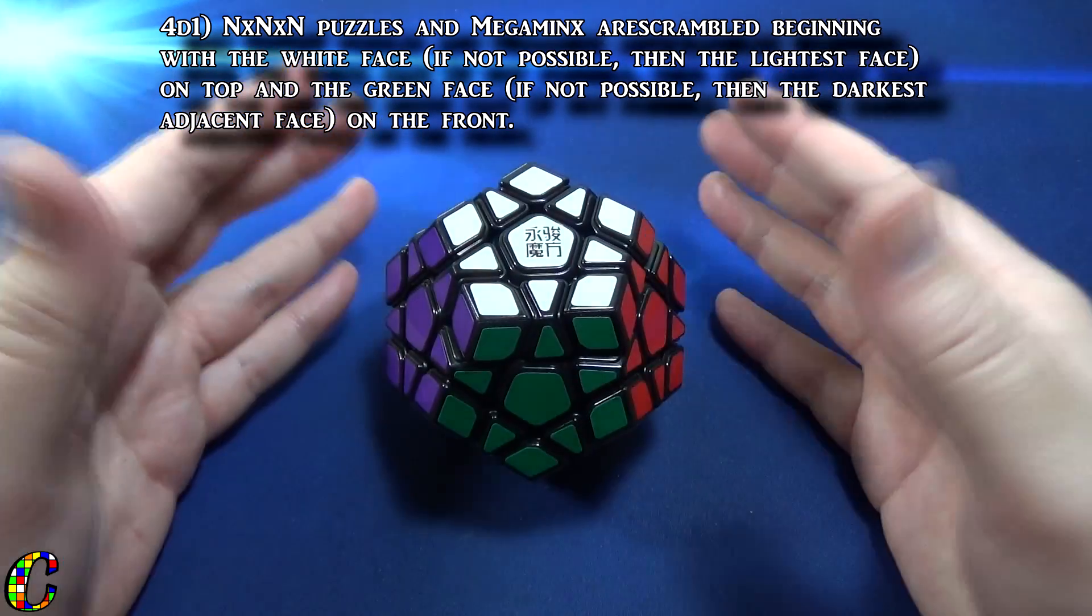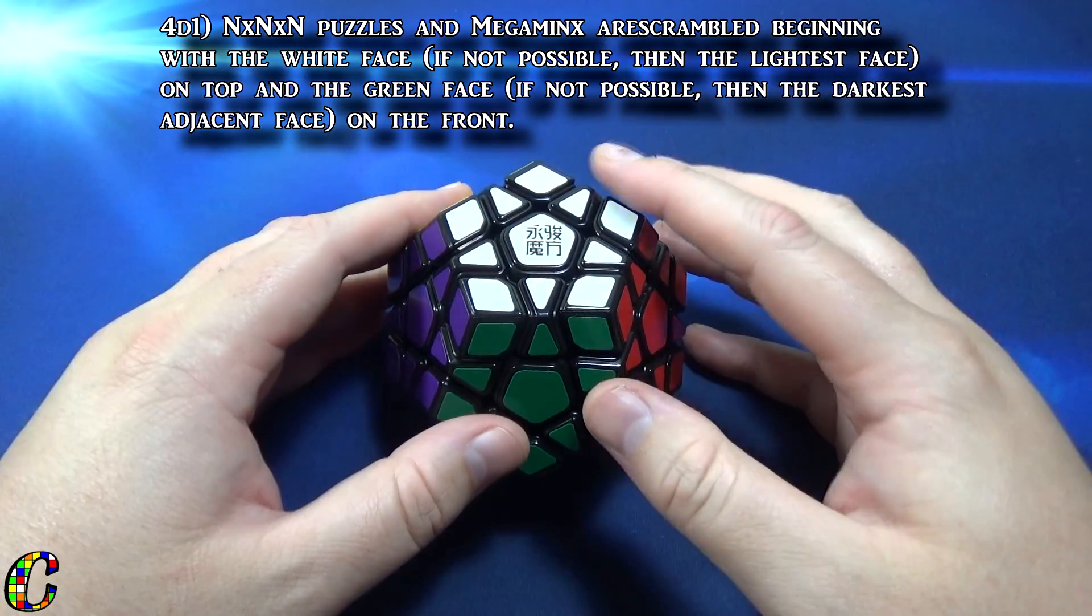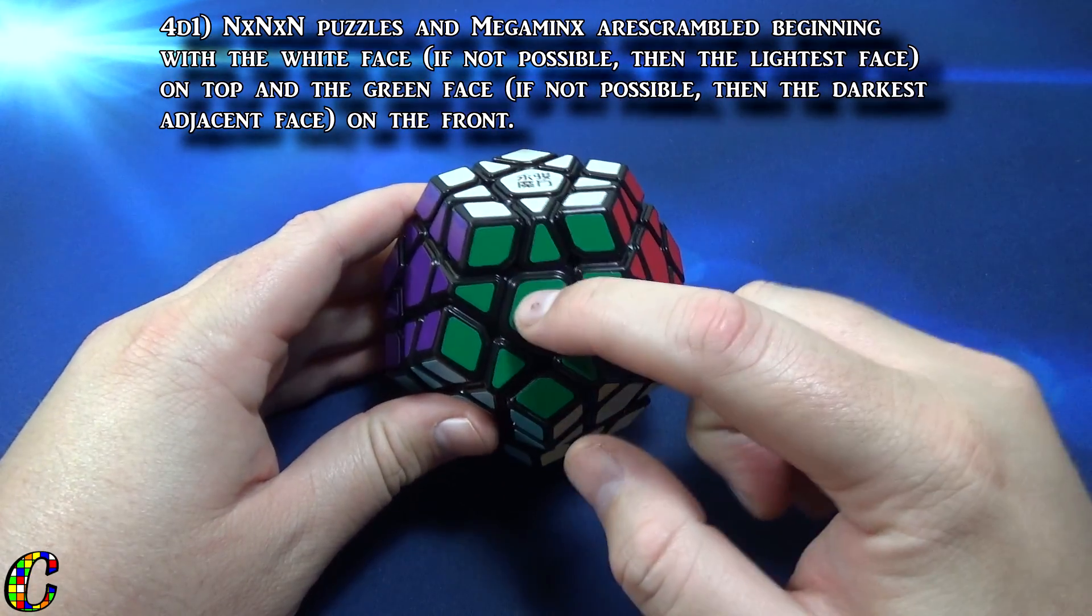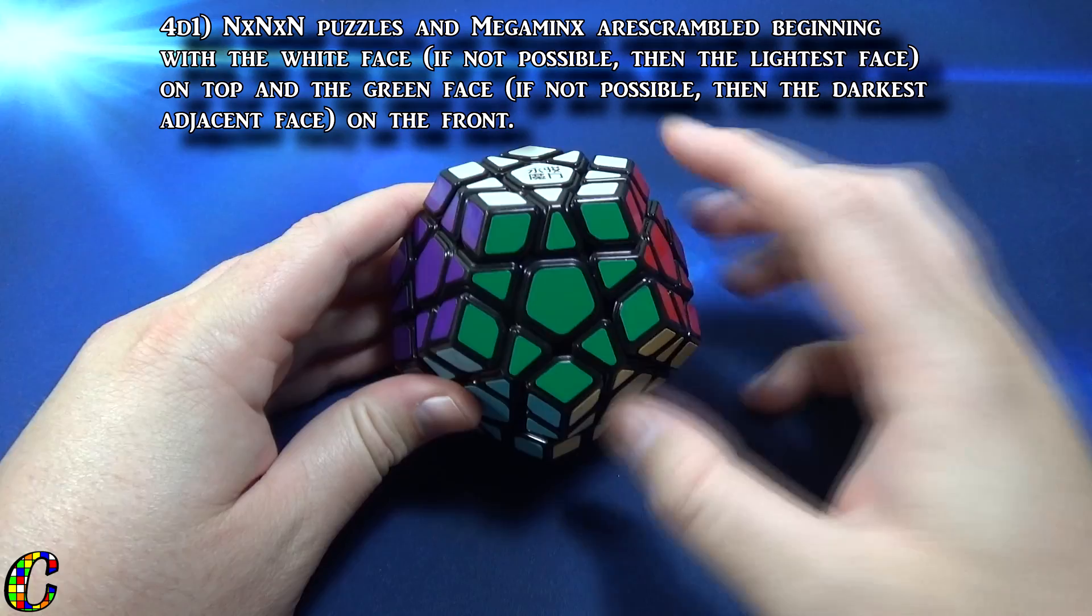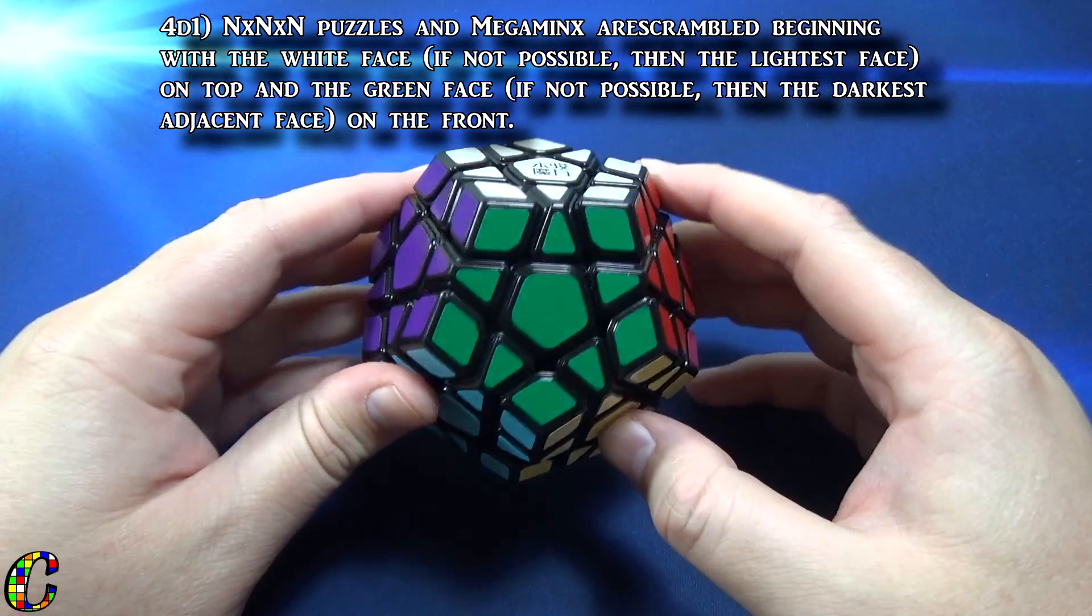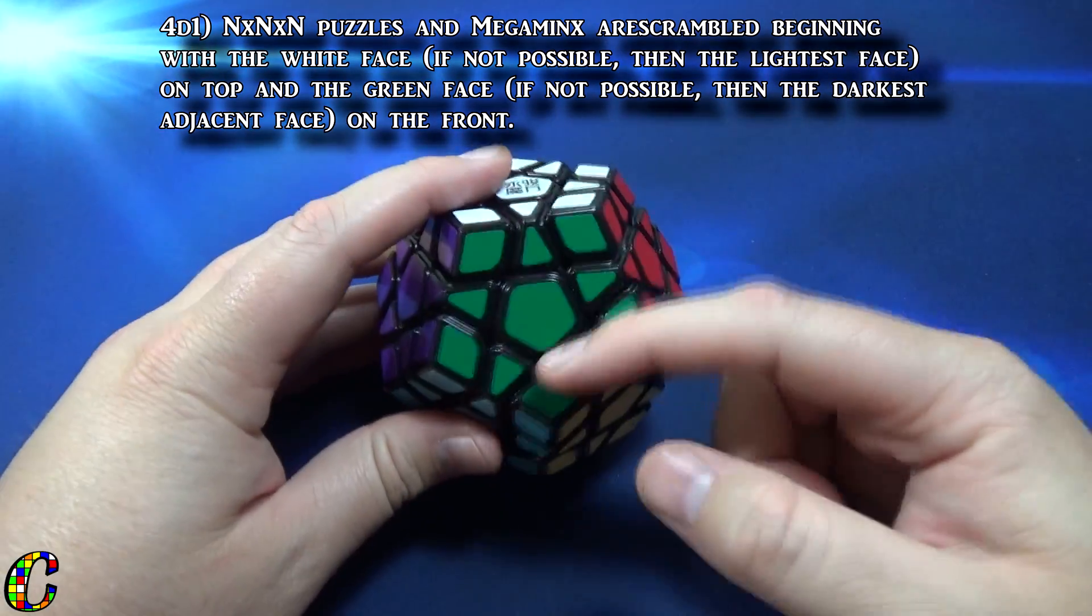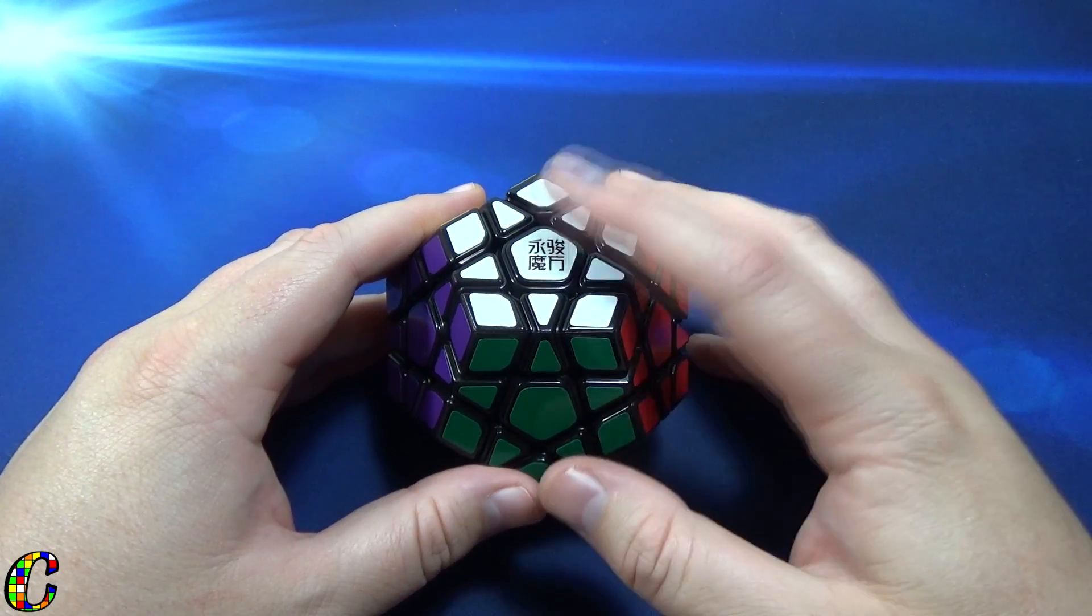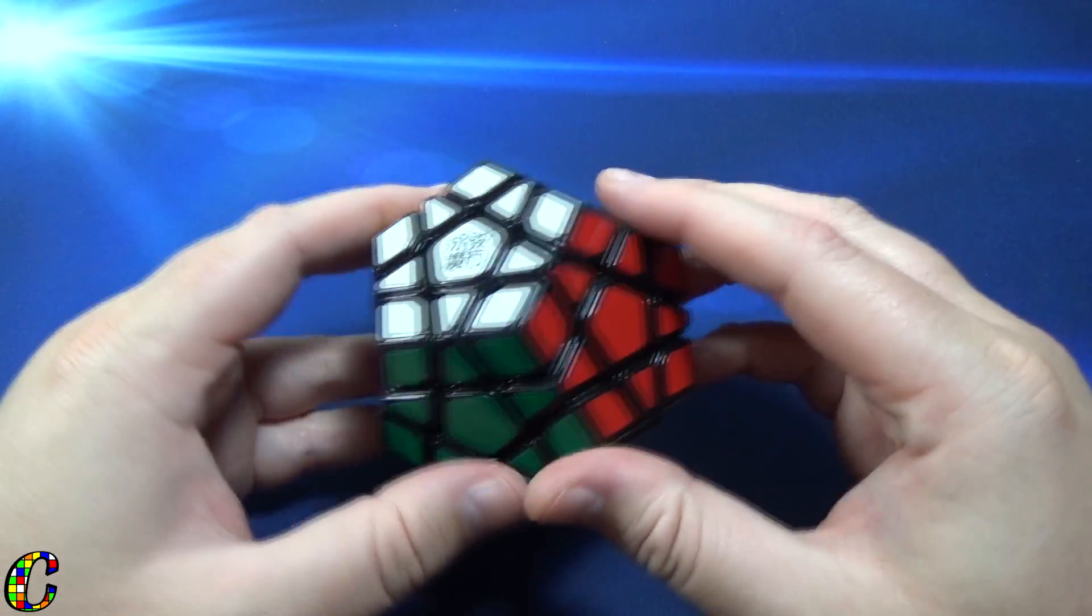For example, if someone uses a white megaminx and they use a black face, you'll put the lightest color on top. Then you put green in front. Now if there isn't a green side due to a weird sticker scheme or something different, you put the darkest face in front. So it is flexible and allows for other color schemes if you don't have the standard color scheme on your megaminx.